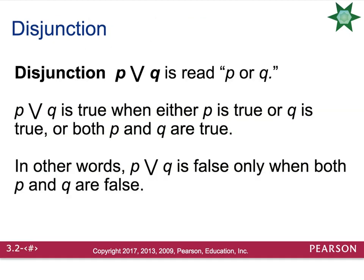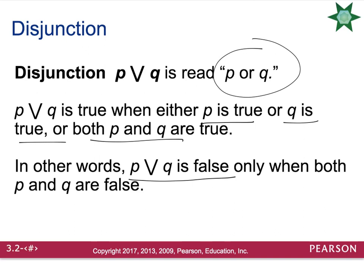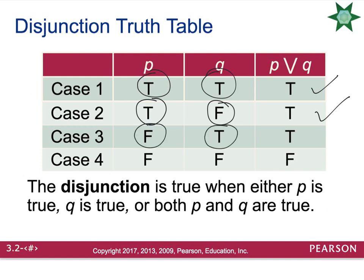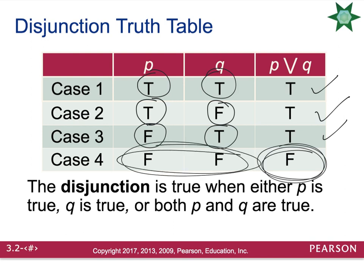Disjunction, which is read 'P or Q,' is going to be true whenever P is true, or whenever Q is true, or whenever both P and Q are true. The only time the disjunction is false is when both P and Q are false. So the truth values for disjunction: if both statements are true, disjunction is true; if first is true and second is false, disjunction is true; if first is false and second is true, disjunction is true; and the only time disjunction is false is if both statements are false.